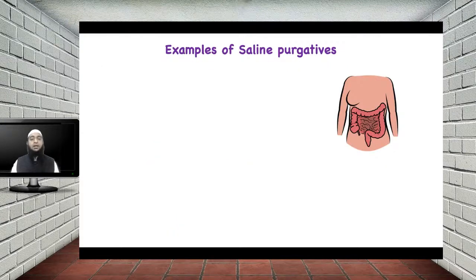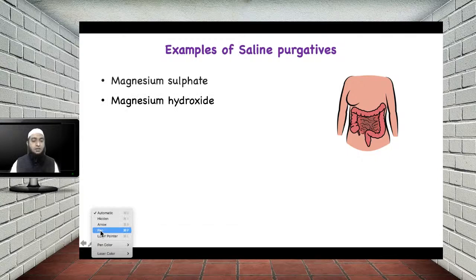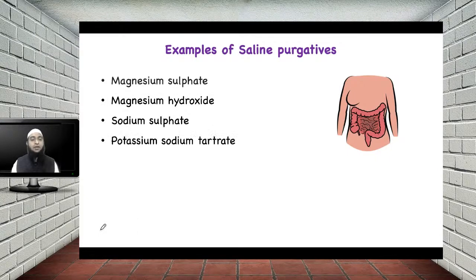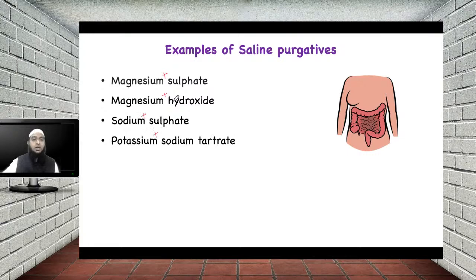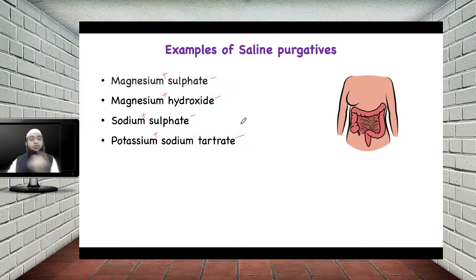Let us see a few examples of saline purgatives: magnesium sulphate, magnesium hydroxide, sodium sulphate, and potassium sodium tartarate. Many examples exist but these are a few. If you look at them, they have highly charged ions — the first ion is generally positive in nature (magnesium, sodium, potassium), whereas the second ion present is generally negative in nature. This way they form a salt, and this salt helps in the attraction or retention of water at the site where saline purgatives are present.